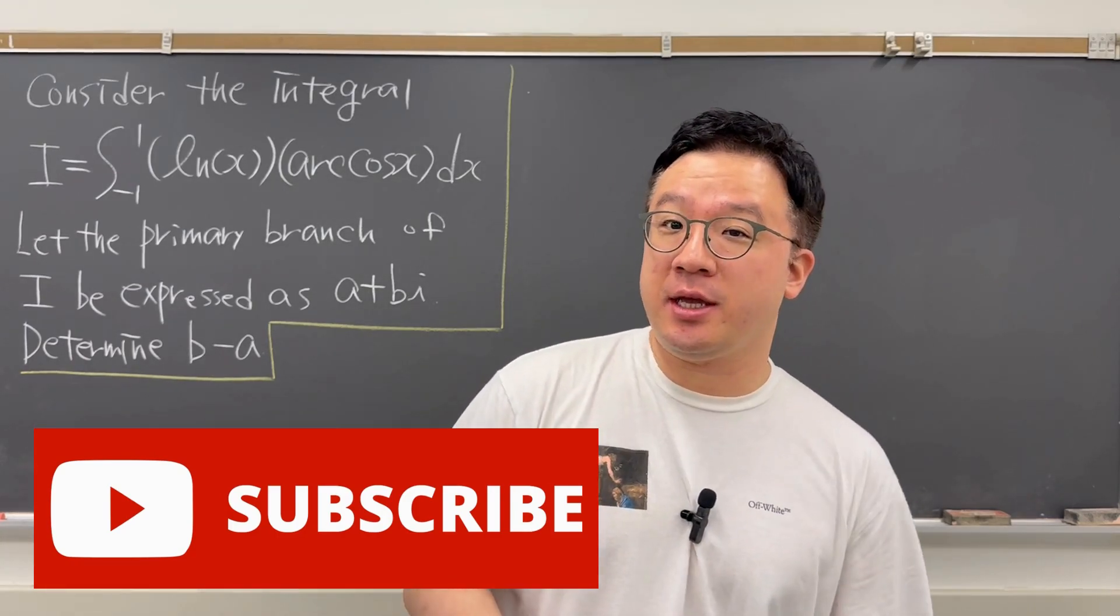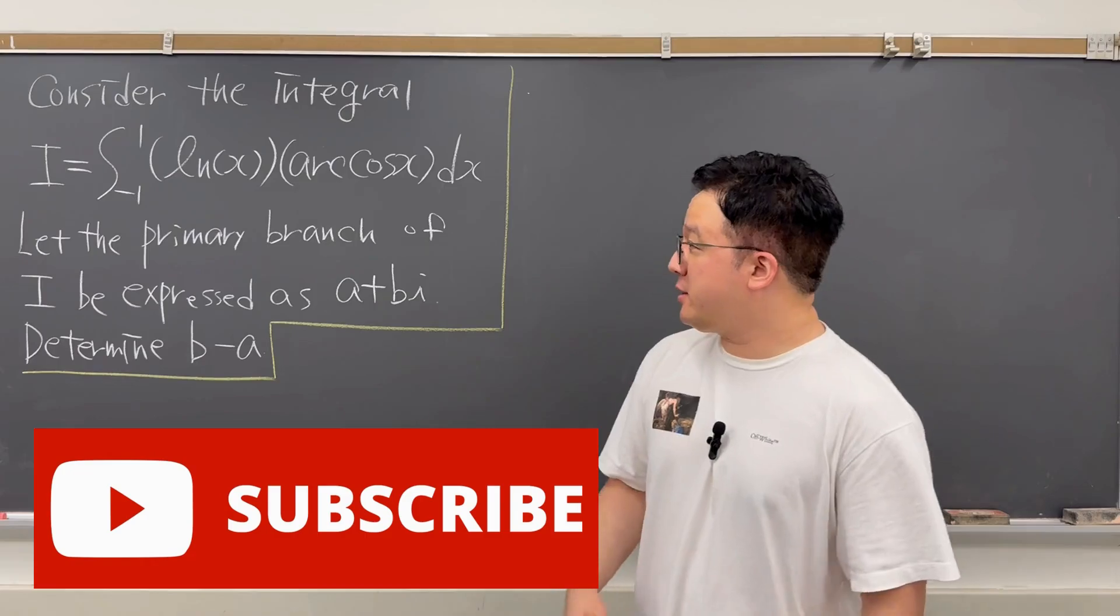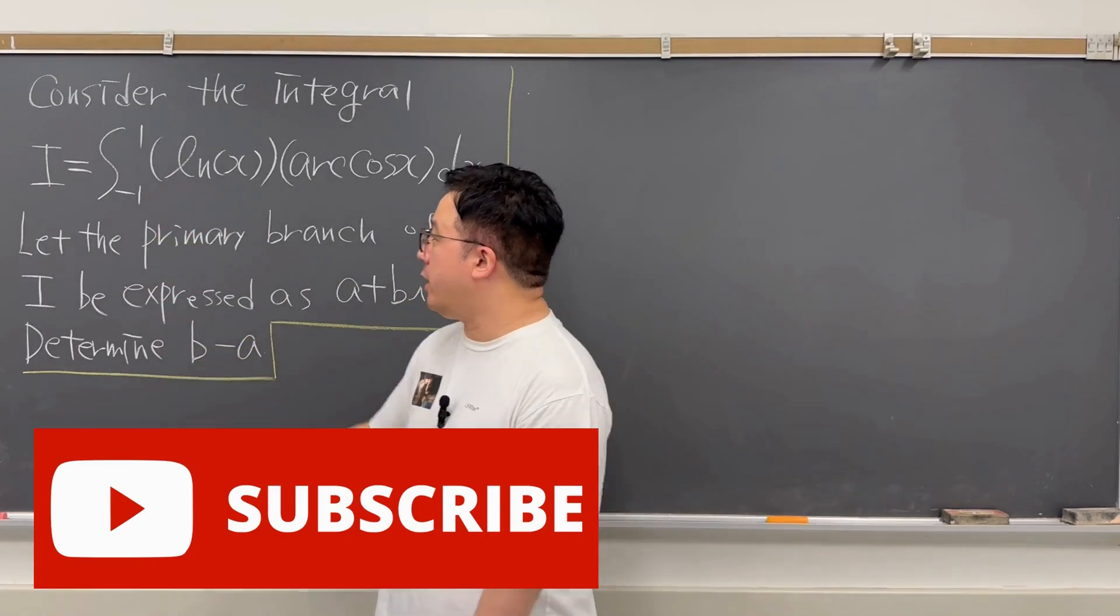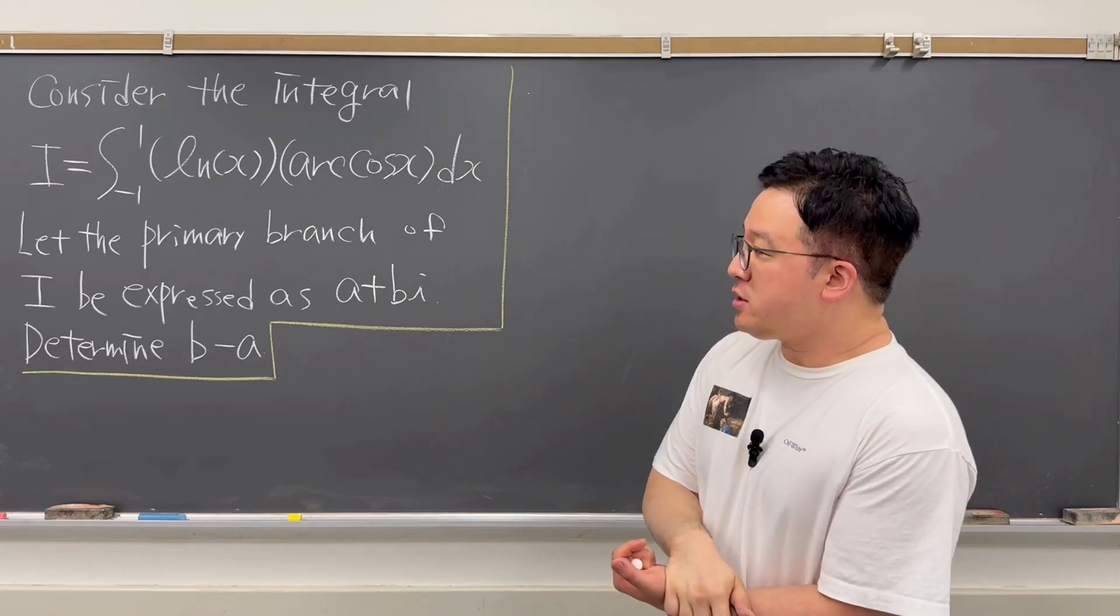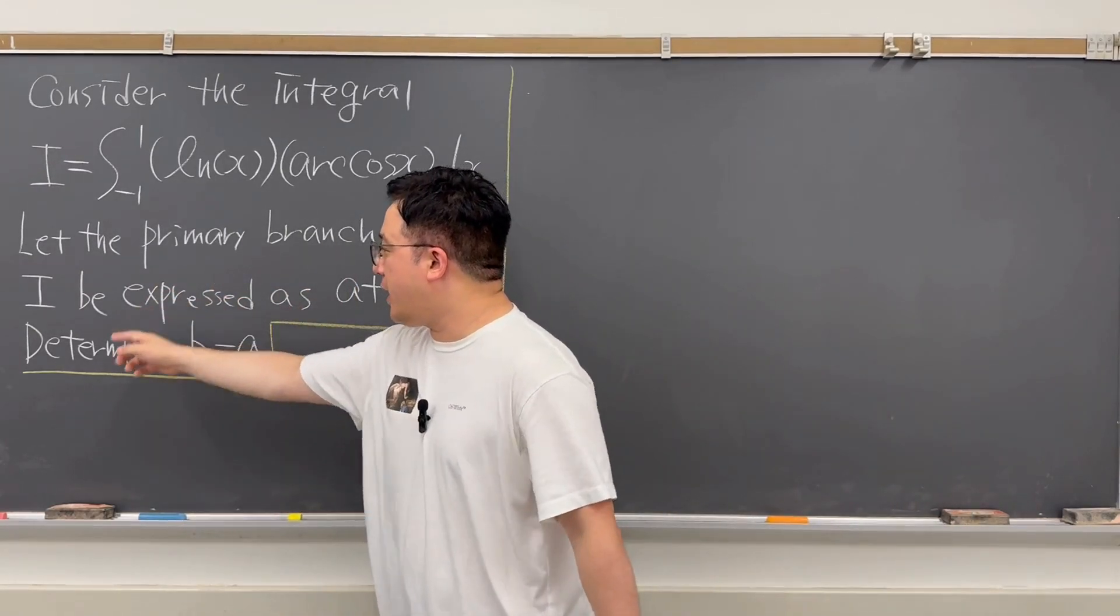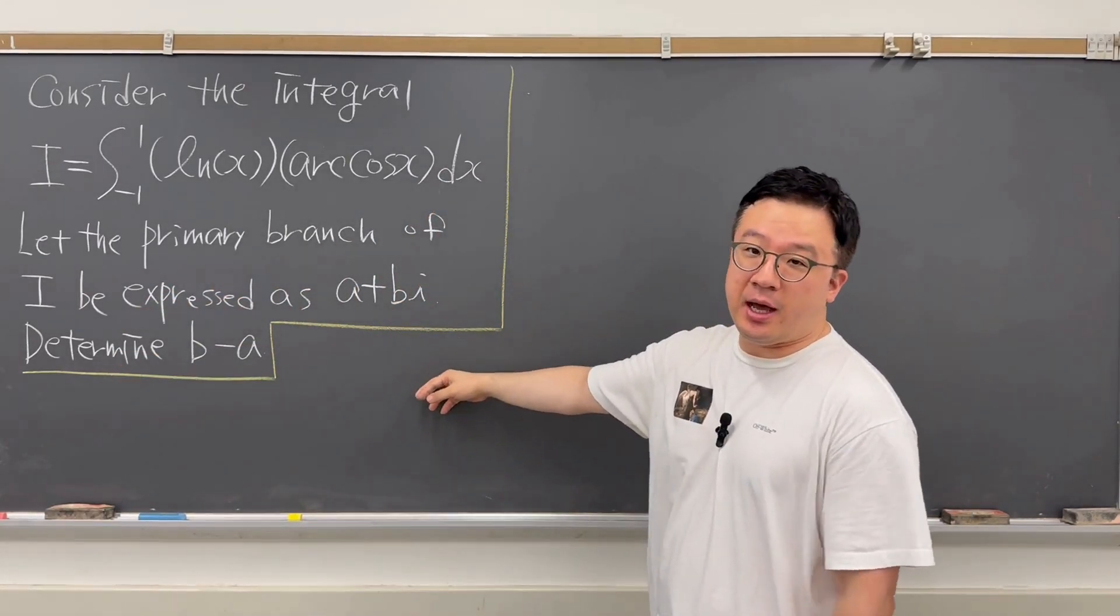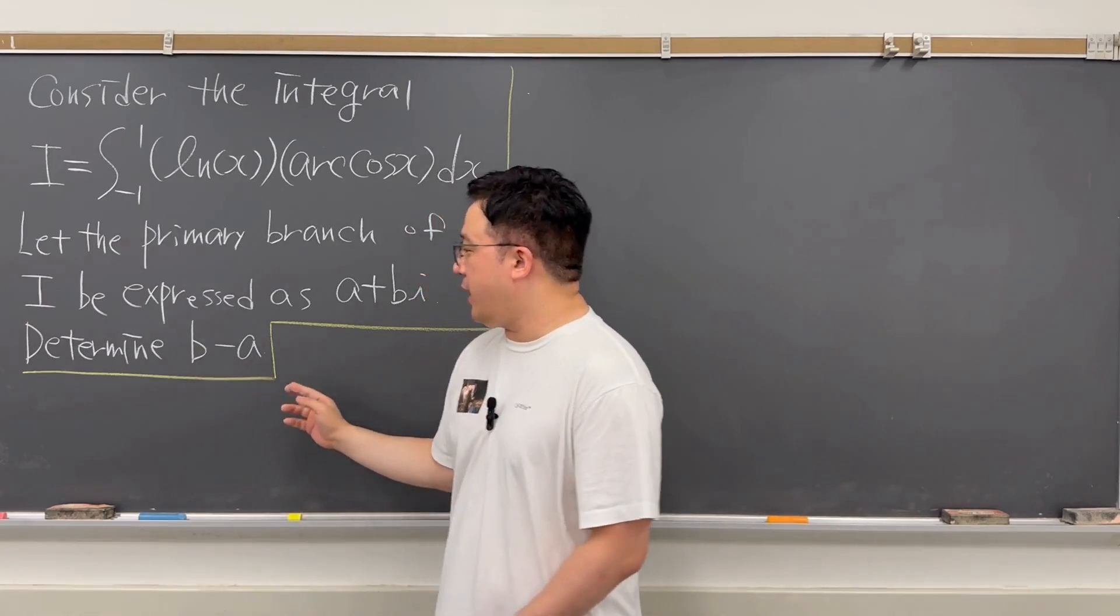So in this video, we're going to be evaluating this interesting integral. The question is, consider the integral I from negative 1 to 1, ln(x) arccos(x) dx. Then the question said, let the primary branch of I be expressed as a plus bi. Then we need to determine b minus a.